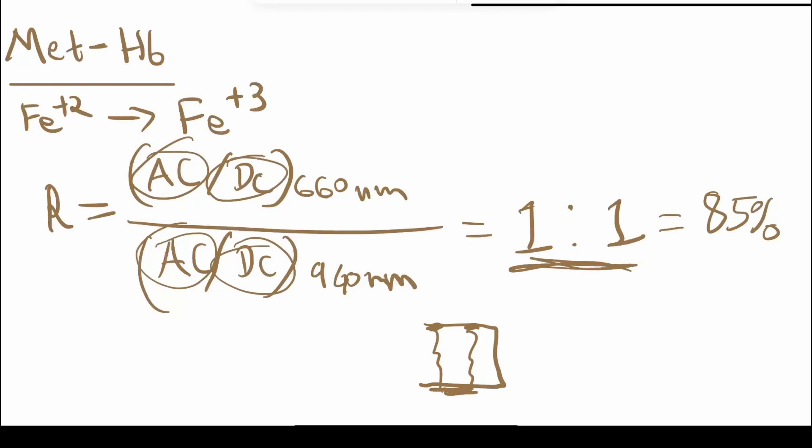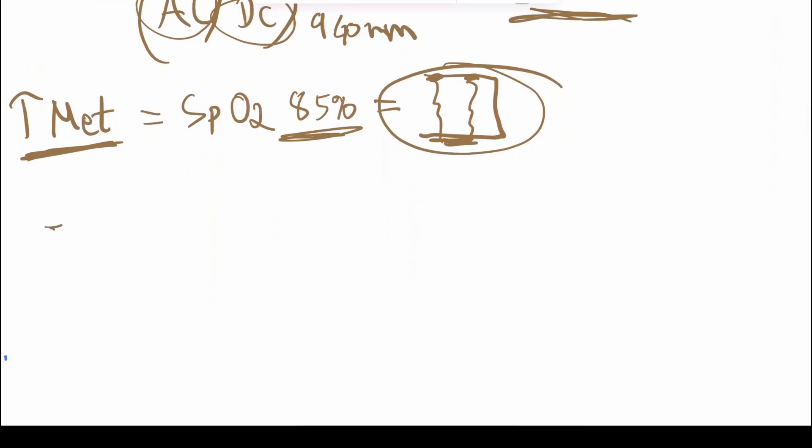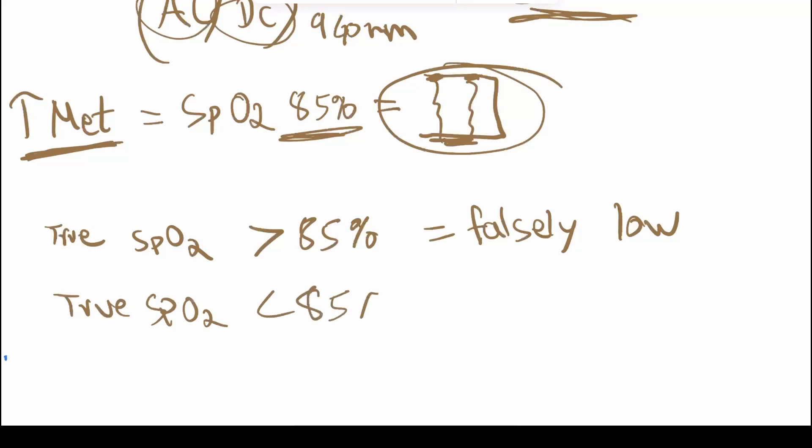This is the exact same thing that happens during methemoglobinemia. The increased amount of methemoglobin in your blood will cause the SpO2 to reach 85%. So increased methemoglobin or no finger will both result in a SpO2 of close to 85%. What this means is, in reality, if your true SpO2 was higher than 85%, then you have a falsely low reading. But if your true SpO2 was less than 85%, you'll have a falsely high reading.